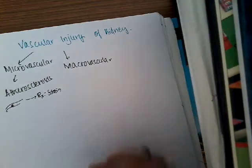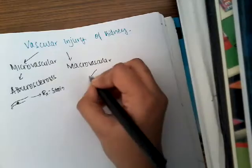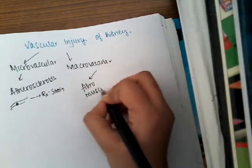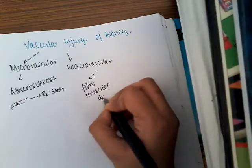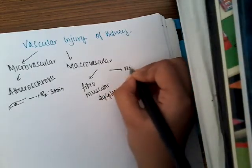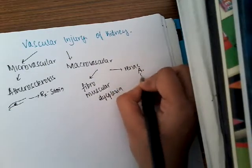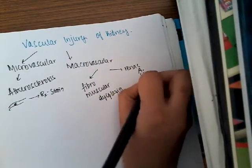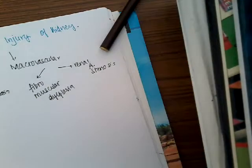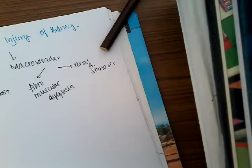What is the macrovascular injury? It can be either fibromuscular dysplasia or it can be renal artery stenosis.